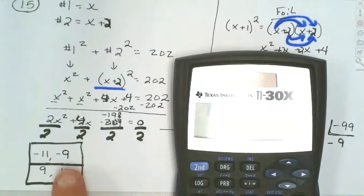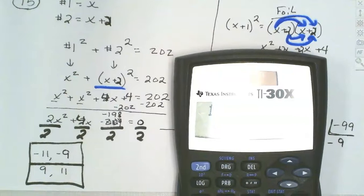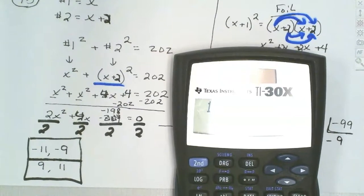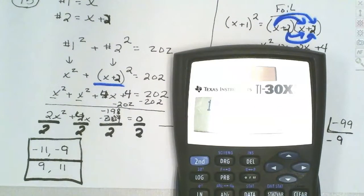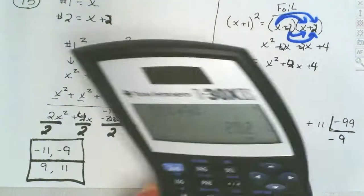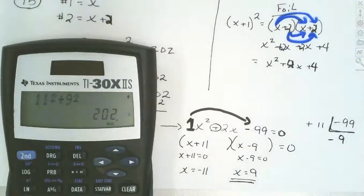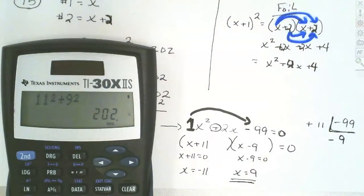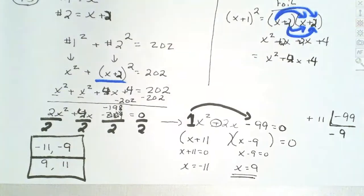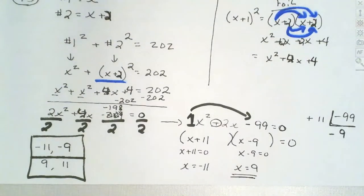Let's see if these make sense. When you square a negative number, it becomes positive. So if I plug these back in and square them, they should give 202. And indeed, 11 squared plus 9 squared equals 202. That's why we have two cases — a positive set that works, and a negative set, because squaring a negative makes it positive.